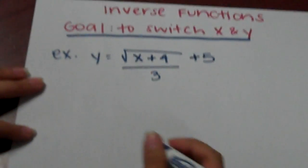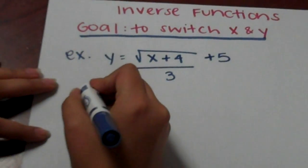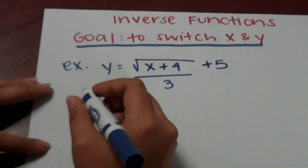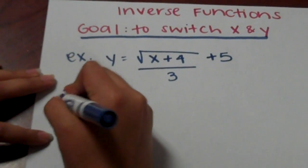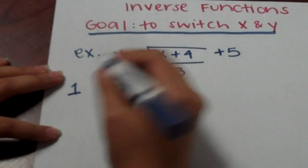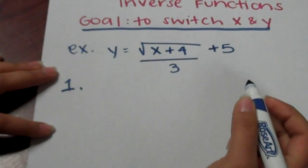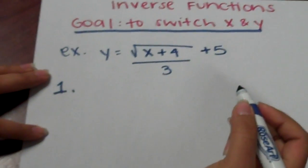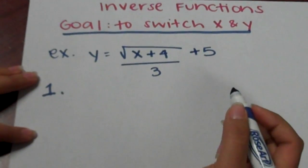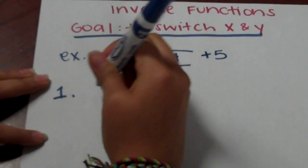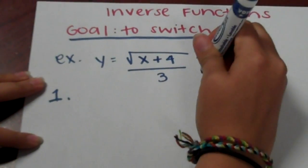The first step in solving this equation is to add or subtract the constant. In this case, we are going to subtract 5 from both sides of the equation.